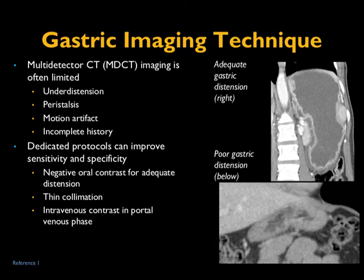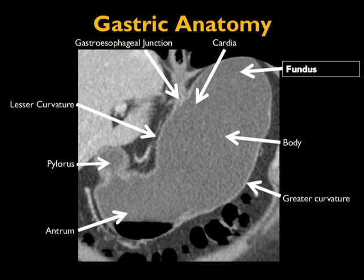As with all CT, technique is everything. The biggest source of errors, both overcalling and undercalling gastric pathology, is lack of good gastric distension. Whether you use positive contrast, water, or air, you need good distension. In our practice every patient gets three cups of oral contrast, with the last cup given when the patient gets on the table to guarantee the stomach is well distended. Positive contrast is best for fistulas or perforation sites; neutral contrast is best for small ulcerations and small tumors.